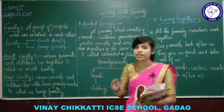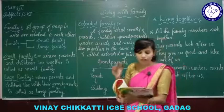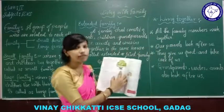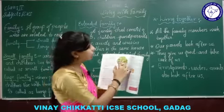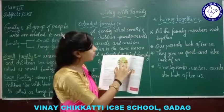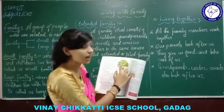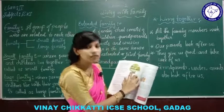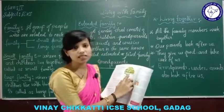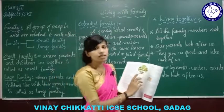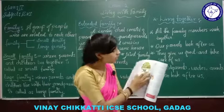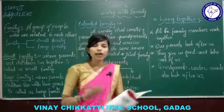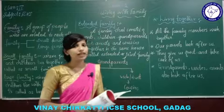And here, see the family tree. Grandma and grandpa are there, then dad and mom, uncle, aunt, siblings, and cousins — this is an example of a family tree. You can make your family tree also.